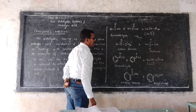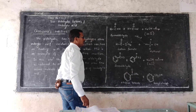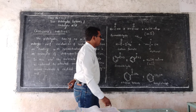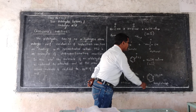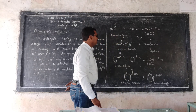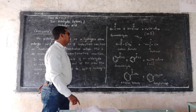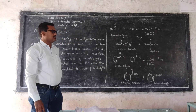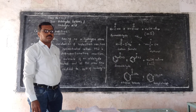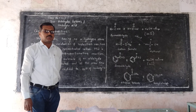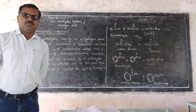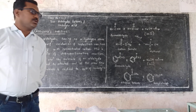C6H5COONa — another molecule of benzaldehyde is reduced to benzyl alcohol. In this way, this reaction is a self-redox reaction where oxidation as well as reduction occur simultaneously. We can also learn cross-Cannizzaro's reaction by taking different combinations.